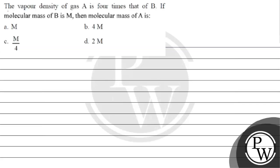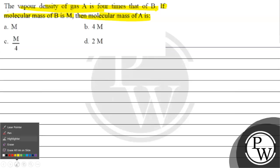Let's read this question. The question says the vapor density of gas A is four times that of B. If molecular mass of B is M, then molecular mass of A is: option A: M, option B: 4M, option C: M/4, option D: 2M. The key concept for this question is